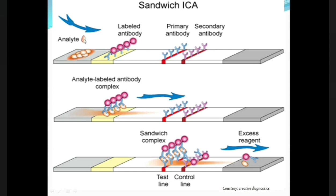Assuming the sample is positive and contains the antigen, the sample moves towards the conjugate pad, which has a detector conjugate carrying the colloidal gold-labeled antibody. Upon the liquid sample coming into contact with the detector conjugate, the antigen from the liquid sample binds with the labeled antibody of the conjugate, forming an antigen-labeled antibody complex, or immunocomplex. This immunocomplex moves further towards the nitrocellulose membrane and the test line along with the liquid sample.